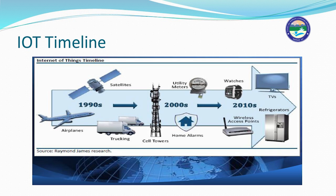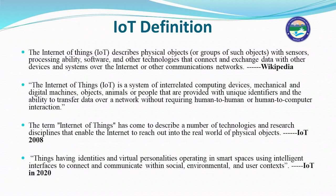Now the IoT definition. According to Wikipedia, the Internet of Things describes physical objects or groups of such objects with sensors — sensors play a very important role in IoT — with processing ability, software, and other technologies that connect and exchange data with other devices and systems over the internet or other communication networks.